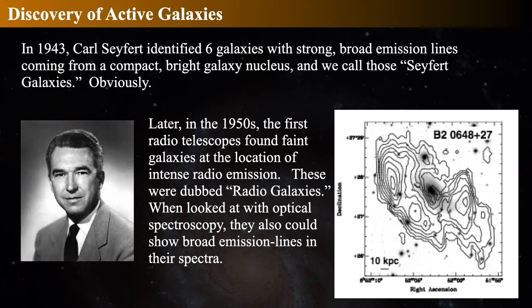Active galaxies were discovered first in 1943 by Carl Seyfert. He studied galaxies that had strong, broad emission lines coming mostly from the nucleus of the galaxy, and they were bright and compact. Those are called Seyfert galaxies. In the 1950s, radio telescopes found many faint galaxies at the location of extraordinary radio emission, and they're called radio galaxies. So there were Seyfert galaxies with broad emission lines and radio galaxies doing a lot of extra radio emission.